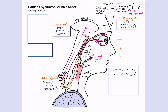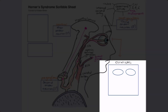When the third order neurons arrive at the eye they do a couple of things: they contribute to eyelid retraction through Müller's muscle, and they contribute to pupillary dilatation. In the absence of this innervation we get partial ptosis — which may be subtle because other nerves still control the eyelid muscles — and pupillary constriction, which happens because of unopposed parasympathetic tone. Meanwhile the remaining third order neurons follow the path of the external carotid artery and eventually reach the face where they influence those sweat glands.